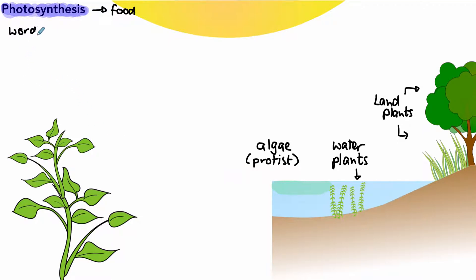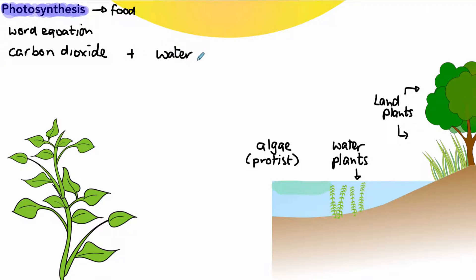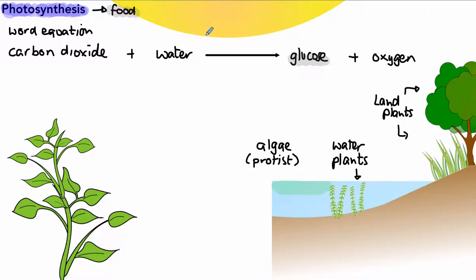To understand how photosynthesis works, we look at a word equation, which is very important to know and remember. Carbon dioxide reacts with water, and during photosynthesis those two produce glucose — the food we're talking about — and also oxygen. Oxygen is a waste product. We also need sunlight, which is a source of energy.